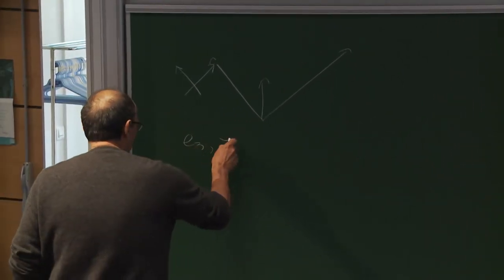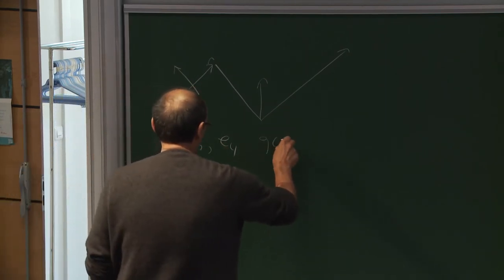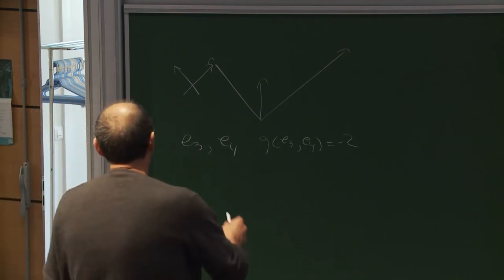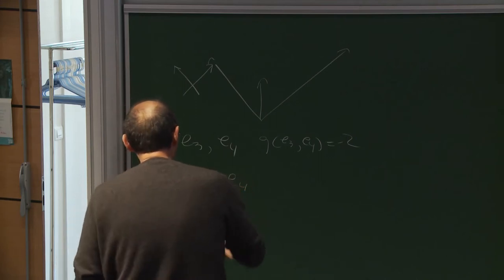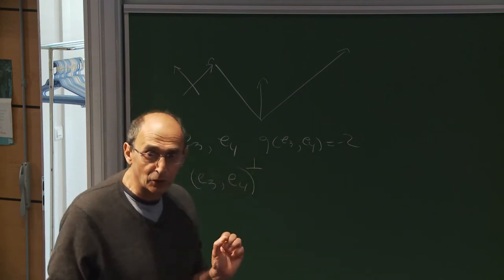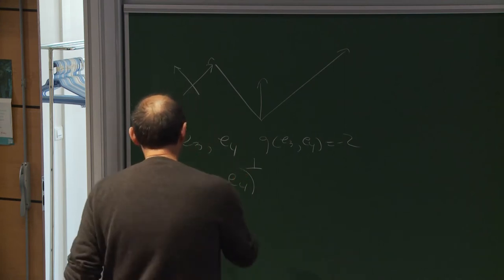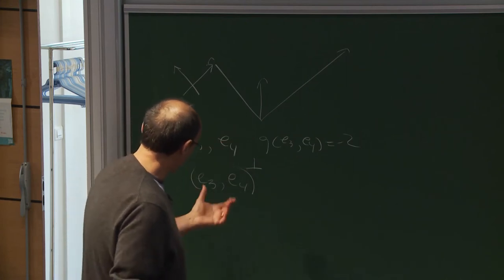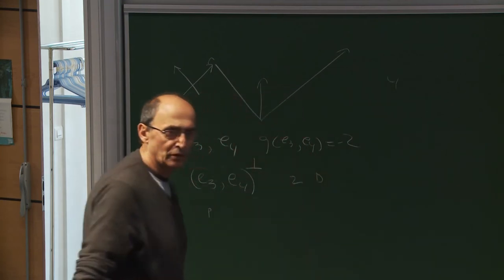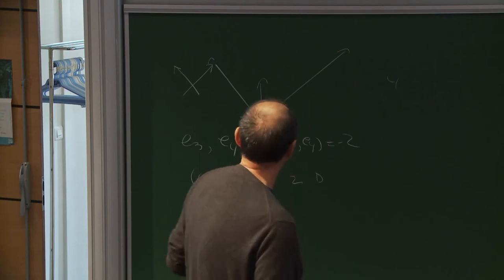Because null directions are so important, when talking about frames you start with two null directions e3 and e4, both null, with g(e3, e4) equal to minus 2 as normalization. Once you pick a null pair, you take the orthogonal complement. In four dimensions this is a two-dimensional spacelike plane at every point, which I call a horizontal structure.